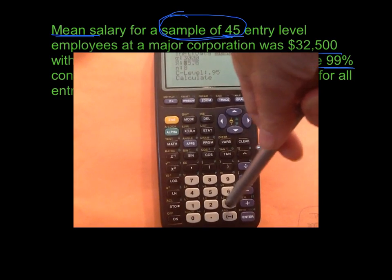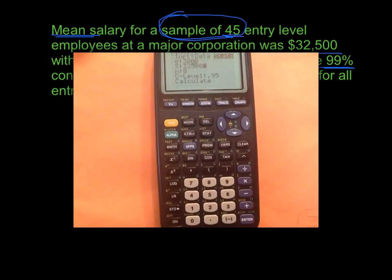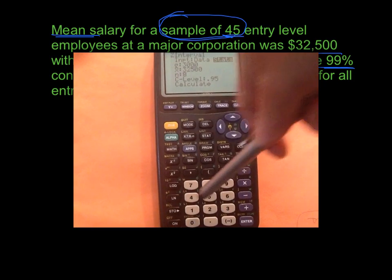My sample mean was 32,500. X bar is sample mean. N is how many were in your survey. We had 45.